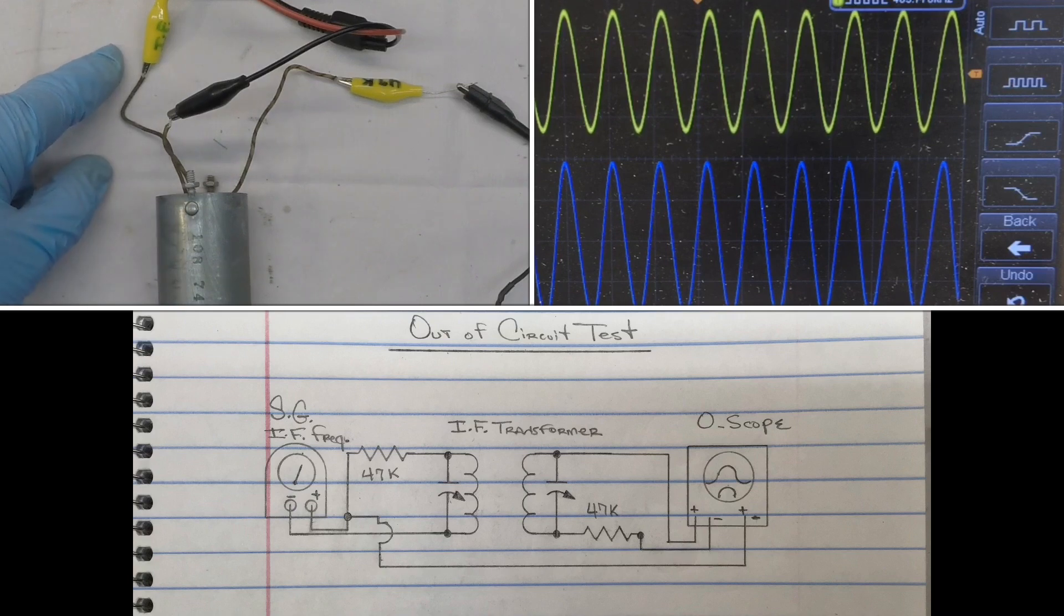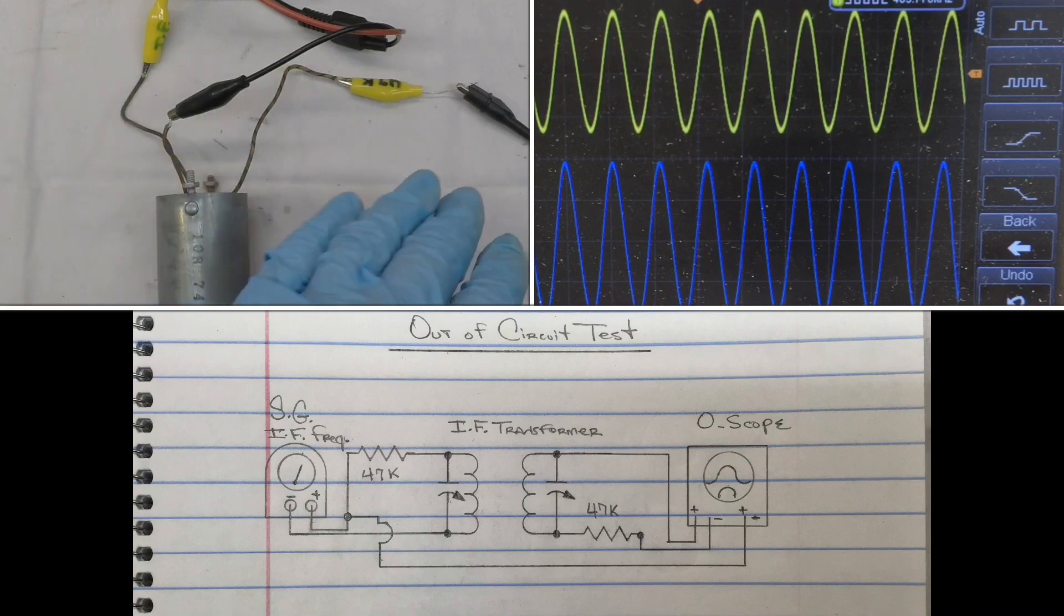I'm using two resistors. Both values are 47k, one on the input, one on the output side, return side.